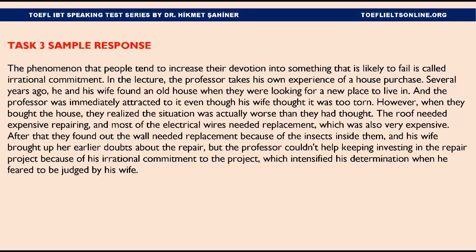Task 3 Sample Response: The phenomenon where people tend to increase their devotion to something that is likely to fail is called irrational commitment. In the lecture, the professor takes his own experience of a house purchase. Several years ago, he and his wife found an old house when they were looking for a new place to live. The professor was immediately attracted to it even though his wife thought it was too run down. When they bought the house, they realized the situation was actually worse than they had thought — the roof needed expensive repairing and most of the electrical wires needed replacement. After that they found out the walls needed replacement because of insects inside them. But the professor couldn't help continuing to invest in the repair project because of his irrational commitment, which intensified when he feared being judged by his wife.